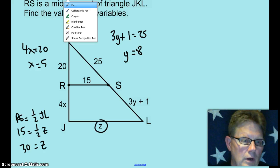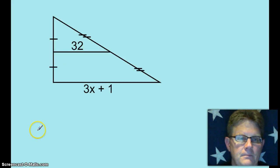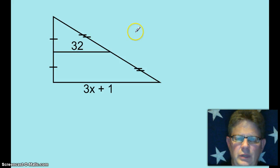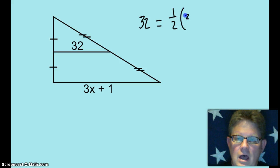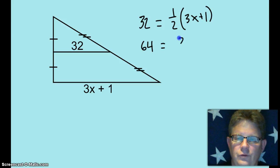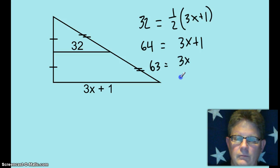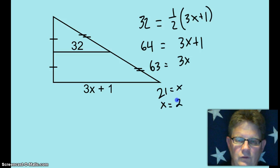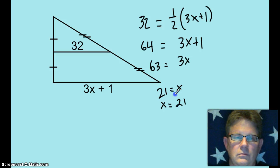Let's look at one more example. You're given that that's a mid-segment, so 32 equals half of the third side, 3X plus 1. Multiply both sides by 2: 64 equals 3X plus 1. Subtract 1 from both sides: 63 equals 3X. Divide both sides by 3: X equals 21. And by the symmetric property, X equals 21. This concludes Honors Geometry Lesson 5.1 on mid-segments.